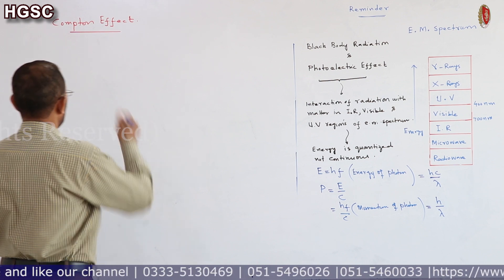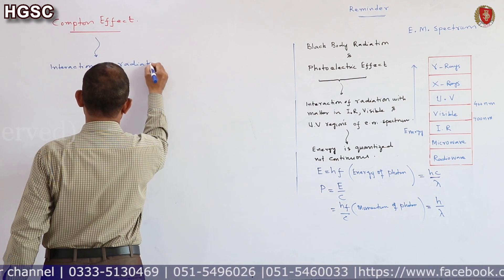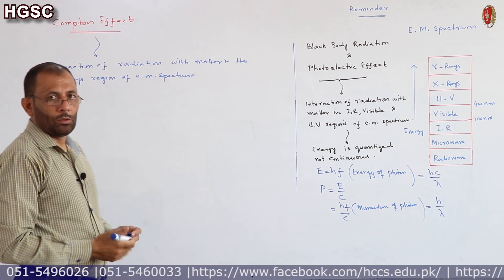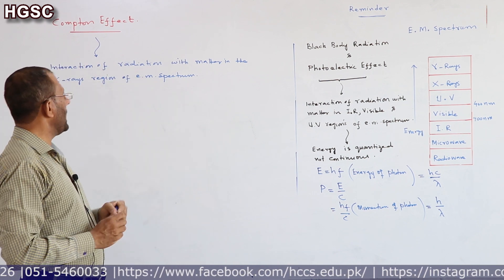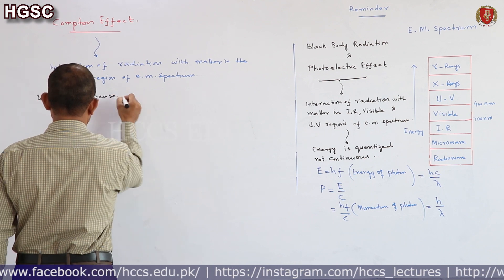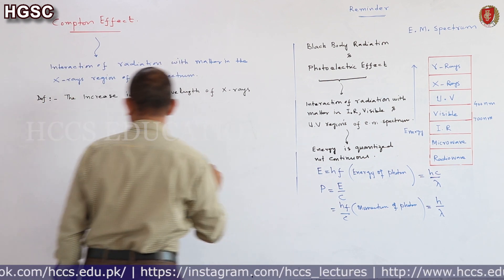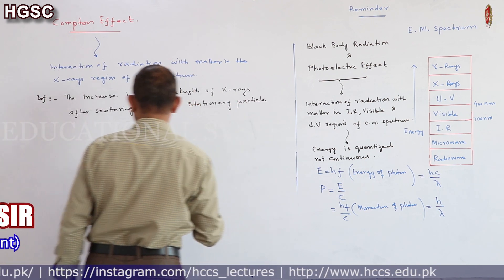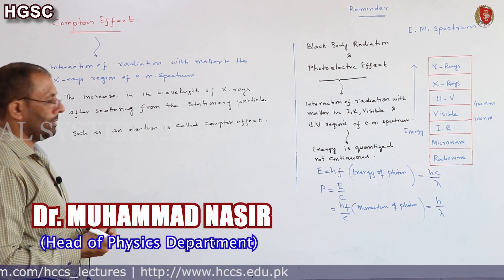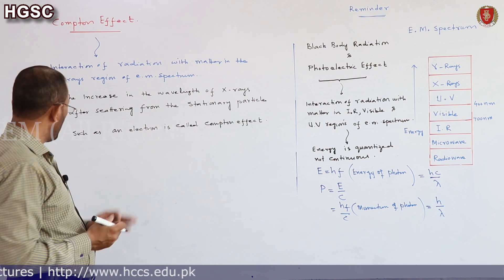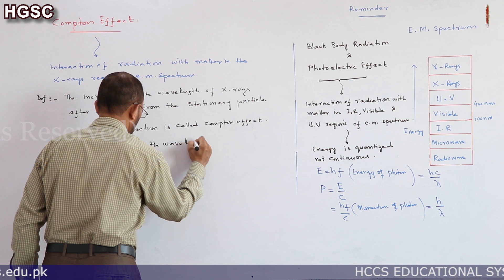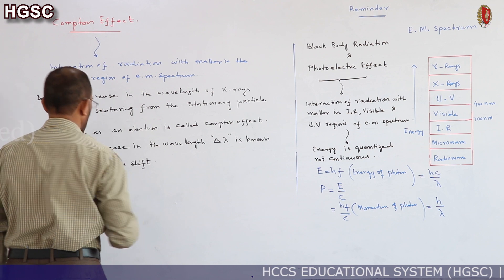All the experimental results of the photoelectric effect could not be explained by the electromagnetic theory of radiation, but were successfully explained by the quantum theory of radiation — credit goes to Einstein. Now, what is Compton Effect? It is an interaction of radiation with matter in the X-ray region of the electromagnetic spectrum. Definition: the increase in the wavelength of X-rays after scattering from a stationary particle such as an electron is called Compton Effect. The increase in wavelength Δλ is known as Compton shift.